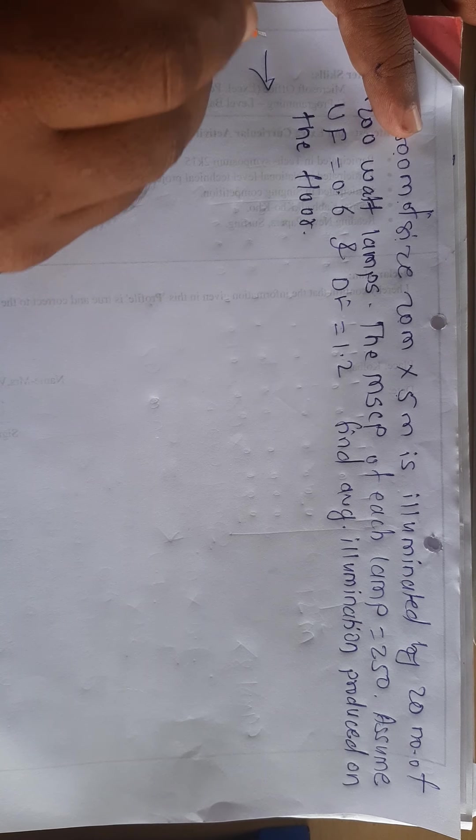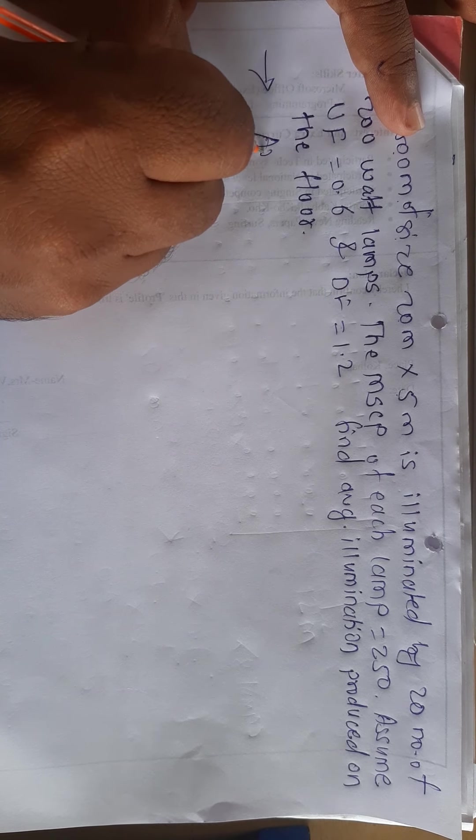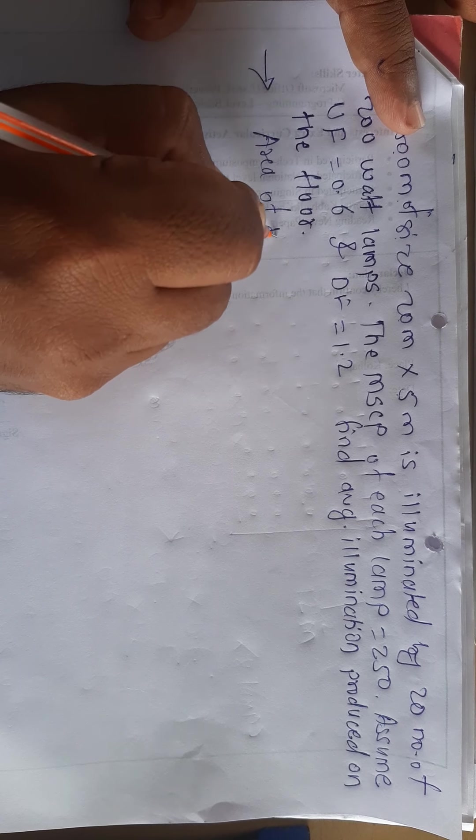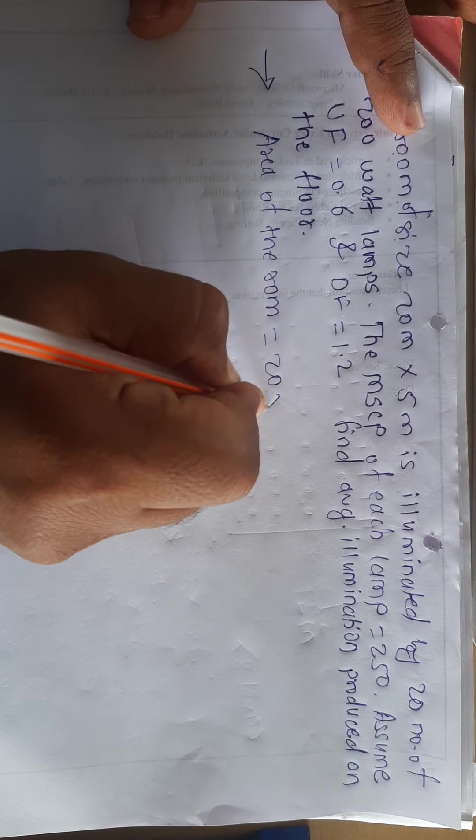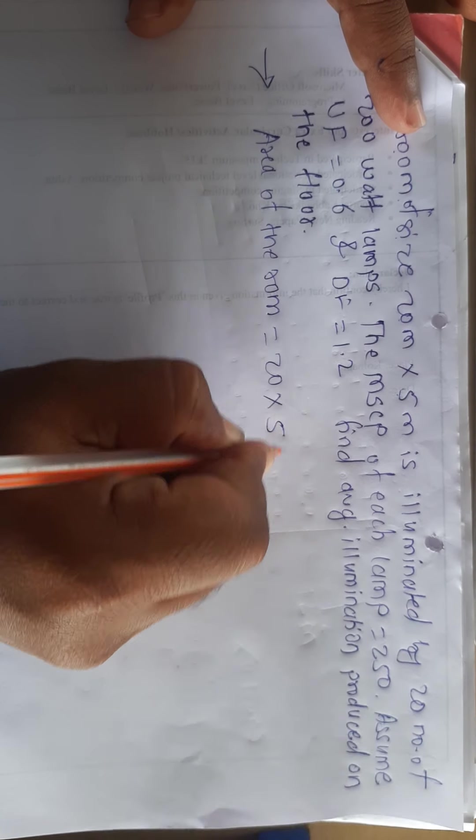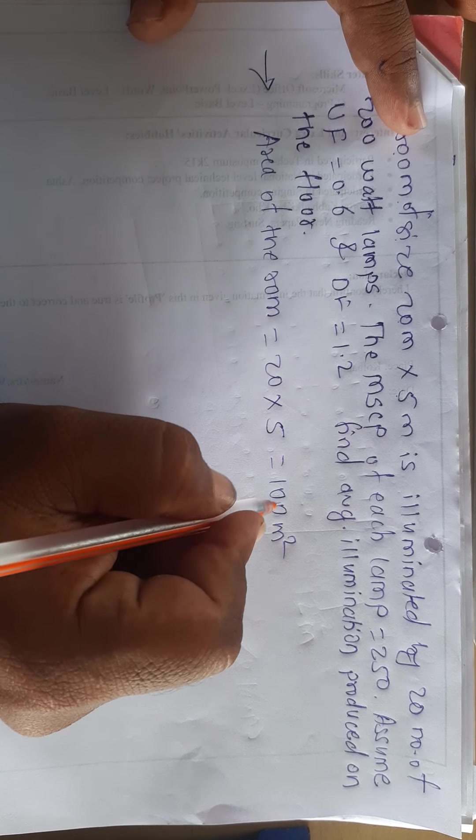As you can see, we have to solve the problem. We have to find the area of the room which is equal to 20 into 5 meter. This means 100 meter square.